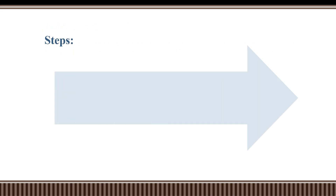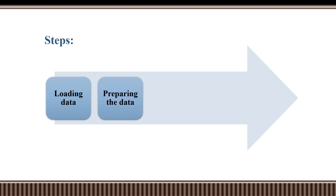We will do the practical steps. First, loading data — we load the dataset. In this practical, we will use the wholesale customers dataset. The next step is preparing the data. Here we will prepare the data and see which data is categorical or numerical, and which column is in the description.